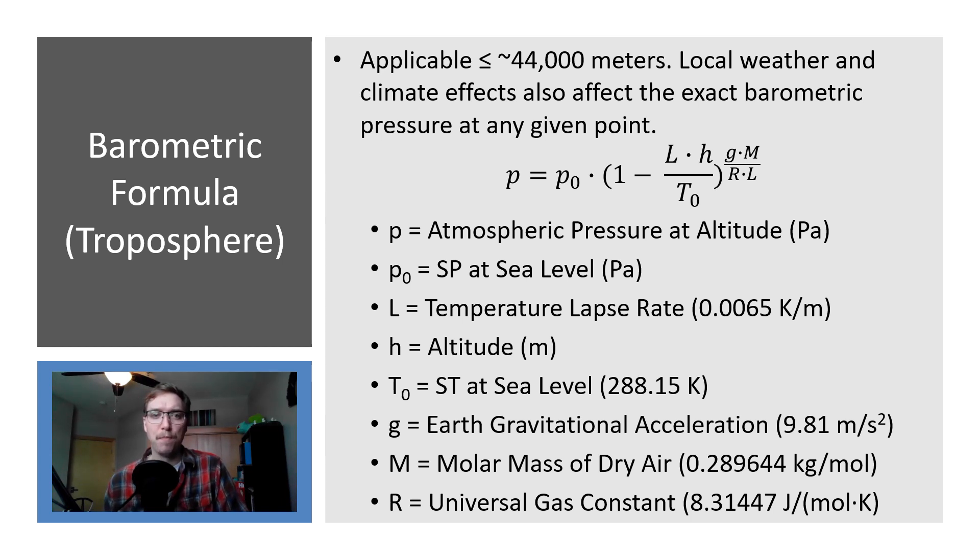So here, atmospheric pressure at altitude in Pascals is equal to p naught, so that zero we often refer to as naught in these types of equations. P naught is equal to the pressure at sea level. L is the temperature lapse rate, how that's changing with height, so 0.0065 Kelvins per meter. Altitude is h in meters. Standard temperature at sea level is 288.15 Kelvin. g is our Earth's gravitational acceleration, 9.81 meters per second squared. M is the molar mass of dry air, 0.289644 kilograms per mole. And then r is our universal gas constant, it's a constant so it's always going to be that, 8.31447 Joules per molar Kelvin.